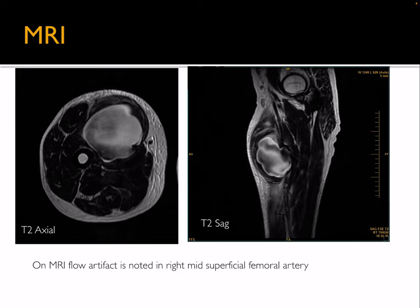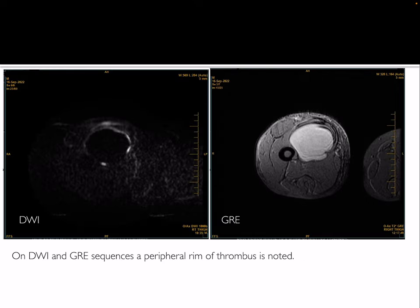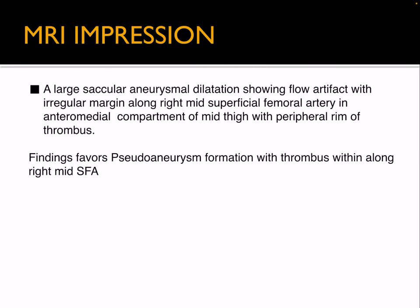The patient was later advised MRI. On MRI, there was flow artifact clearly seen in the T2 and T2* sequences. The hypointense area demonstrates flow artifact. On DWI and GRE sequences, a peripheral rim of thrombus is noted. MRI thus revealed a large saccular aneurysmal dilatation showing flow artifact with irregular margins around the right mid superficial femoral artery in the antero-medial compartment of the mid thigh, with a peripheral rim of thrombus — suggestive of pseudoaneurysm formation along the right mid superficial femoral artery.